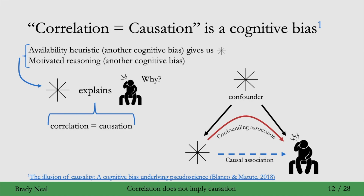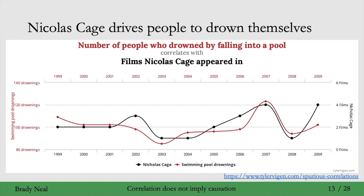As a recap: we use correlation equals causation as a cognitive bias all the time. For example, say we want to explain something and we notice something else is associated with it, then we use correlation equals causation. Here is a real data example where we have the number of people who drowned by falling into a pool and the number of films that Nicolas Cage appeared in — and these two quantities are pretty well associated over time. Does that mean Nicolas Cage drove people to drown themselves, or that he made movies to convince people not to drown? It's probably that these two are correlated just by chance, and one isn't really the cause of the other.